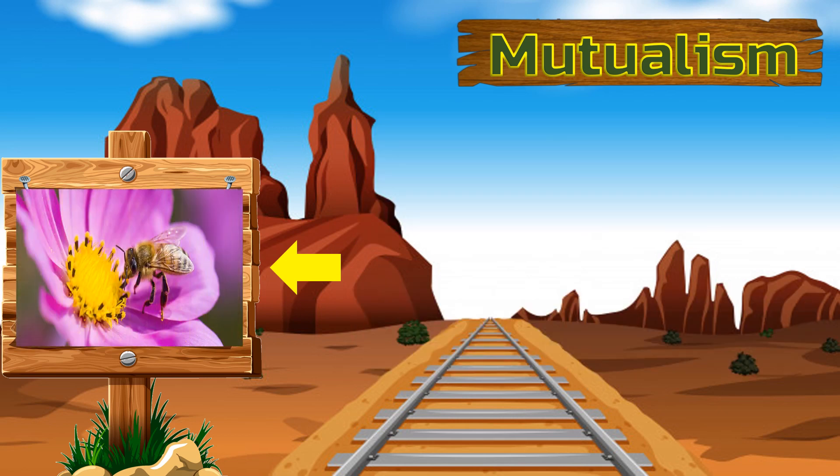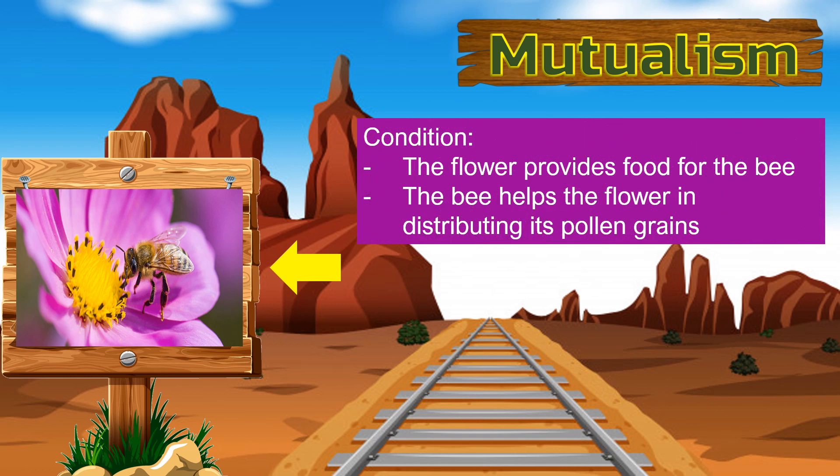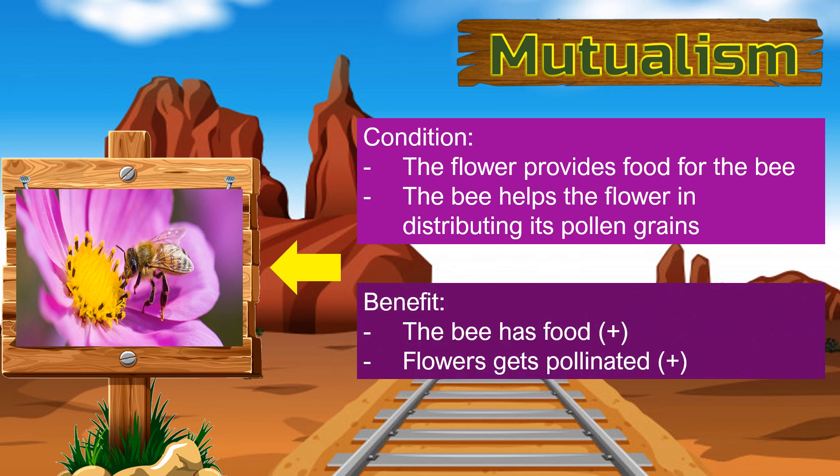Another example is the bee and the flower. The flower provides food for the bee. After getting food from the flower, the bee flies away to another flower, carrying with him some pollen. And with this, the bee helps in the process of pollination. Sa sunod na halimbawa ay ang interaction ng bubuyog at bulaklak. Kukuha ang bubuyog ng kanyang pagkain sa bulaklak at pagkatapos nito, ay lilipad siya papunta sa isa pang bulaklak. Sa ginagawang ito ng bubuyog, tumutulong siya sa proseso ng bulaklak na magparami na ang tawag ay pollination. Both organisms benefit from each other. The bee receives food from the flower and the flower is being pollinated with the help of the bee.